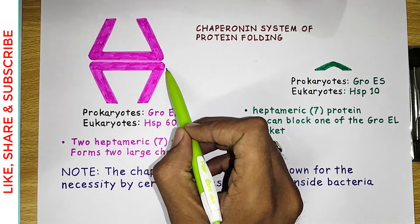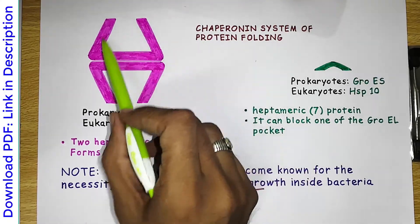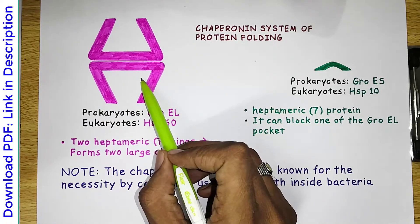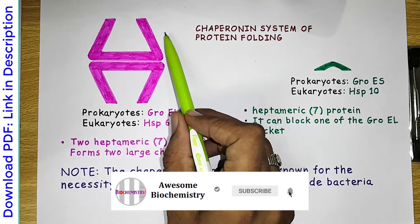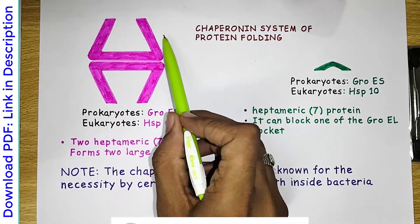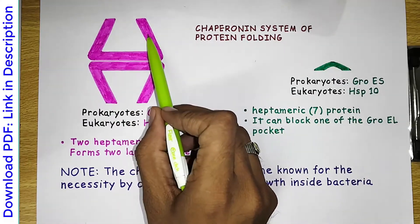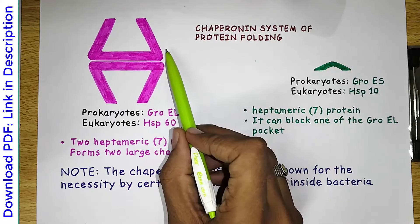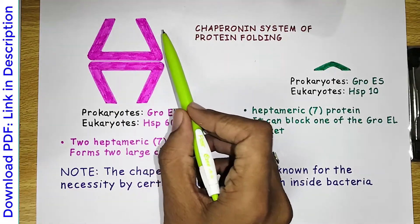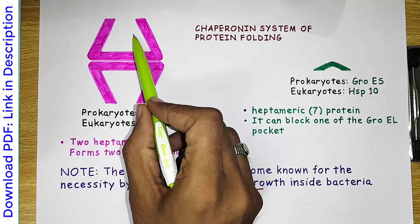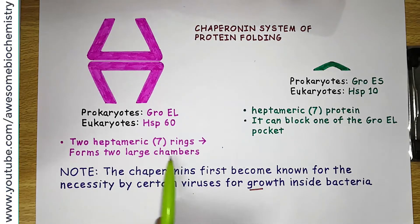As you can see, GroEL has two parts — an upper part and a lower part — and both parts are identical in all manners. Each part is made up of seven subunits, so we call each half a heptameric ring. Seven subunits in the upper part and seven subunits in the lower part makes a total of 14 subunits. Each heptameric portion forms one large chamber, so there are two large chambers in total.